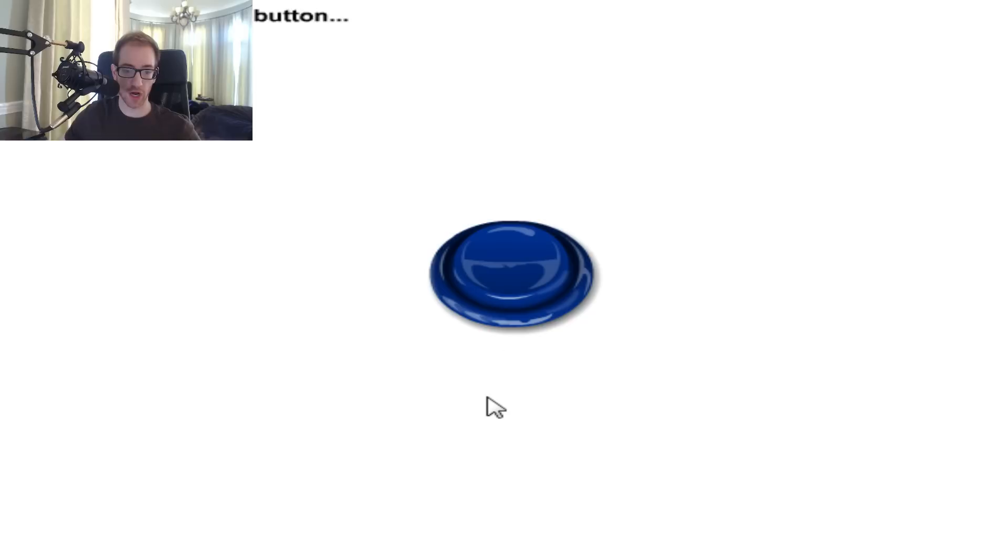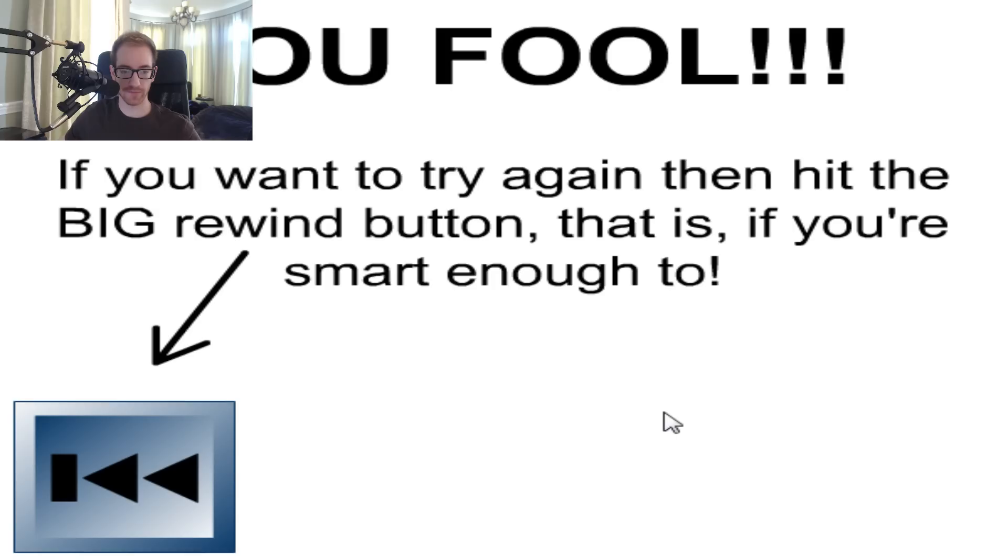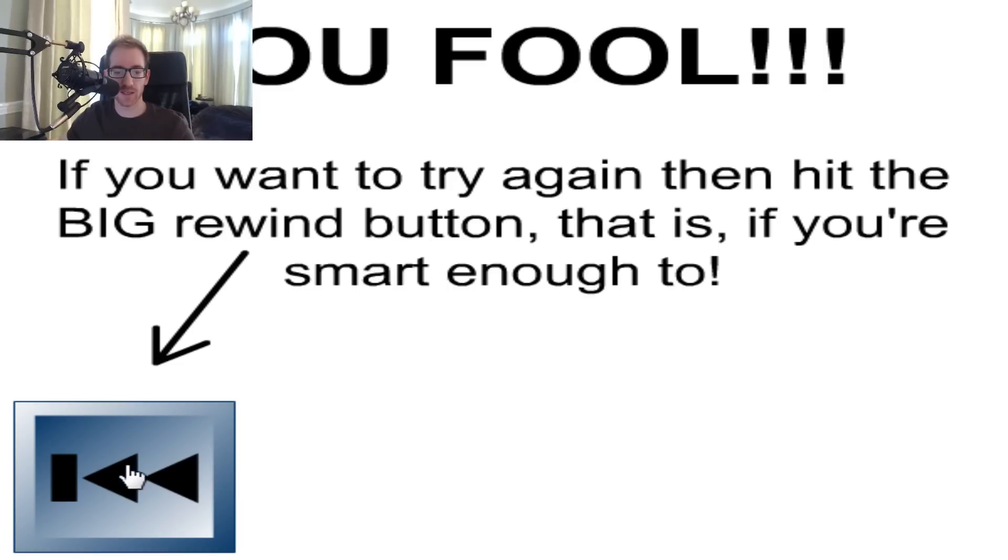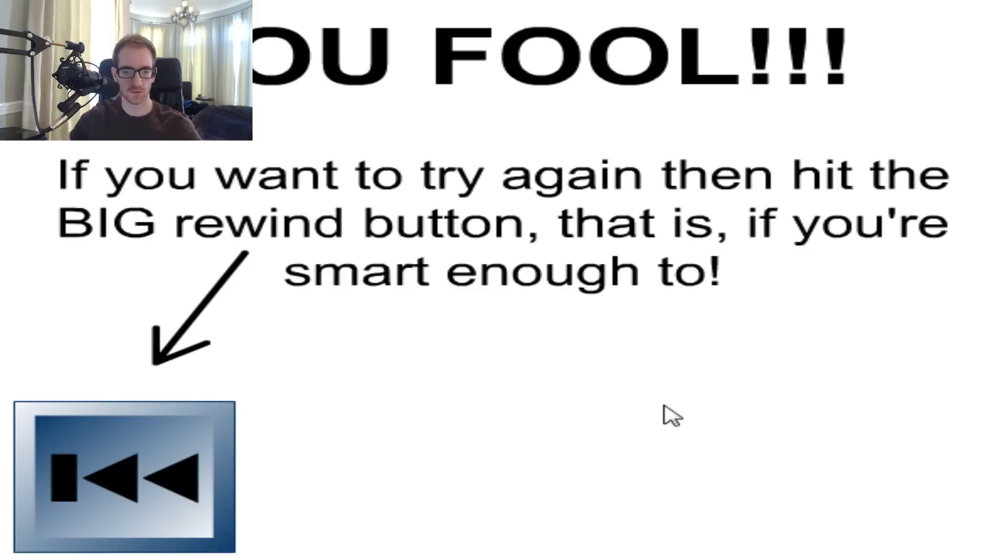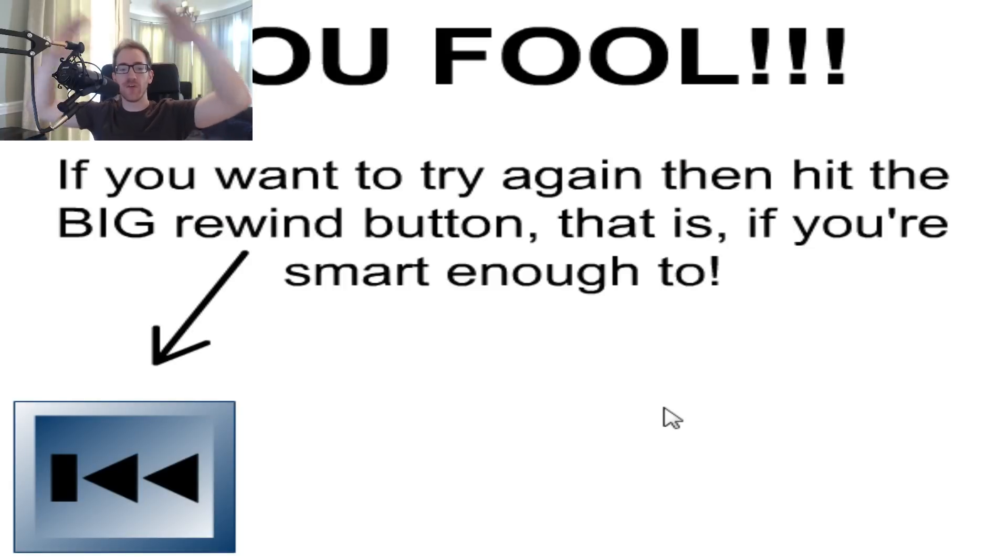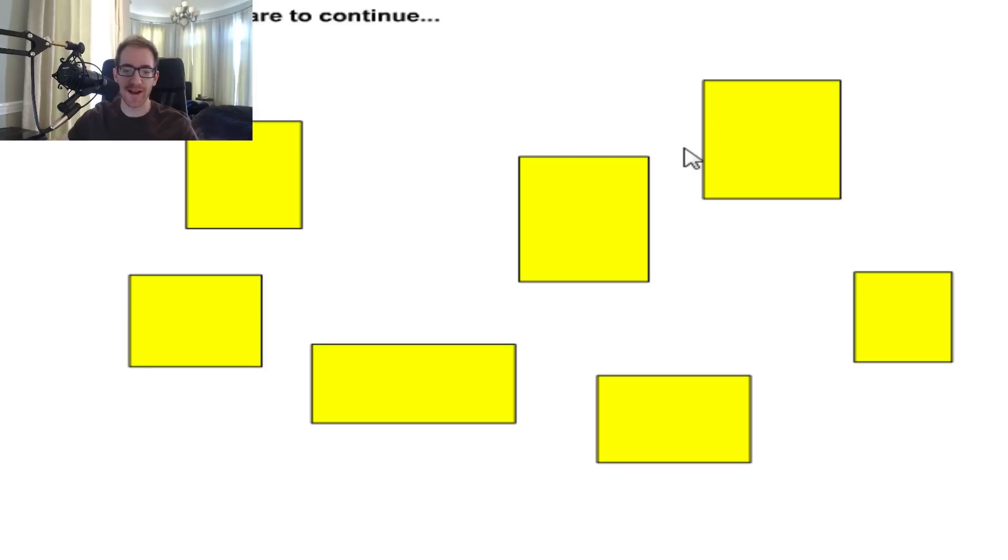Press the green circle. Okay. Fuck! Yellow square to continue. Is it gonna... Fuck! Is this like some sort of... What is this? Why does it make me start all over? If you wanna try again, then hit the big rewind button. That is, if you're smart enough to. Do I have to go all the way back? What the fuck? That was the yellow square, man. I just made it back there. Okay, I'm back here again. Holy shit. Press the yellow square to continue. I just clicked that one. It has to be this one. Okay, I did it.